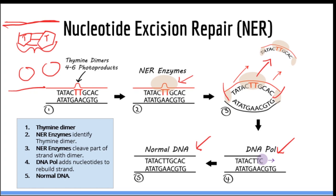This mechanism is extremely important because thymine dimers are constantly being formed — hundreds to thousands of times per day. Without these mechanisms, thymine dimers would accumulate and you would get DNA mutations leading to cancer, such as Xeroderma pigmentosum.